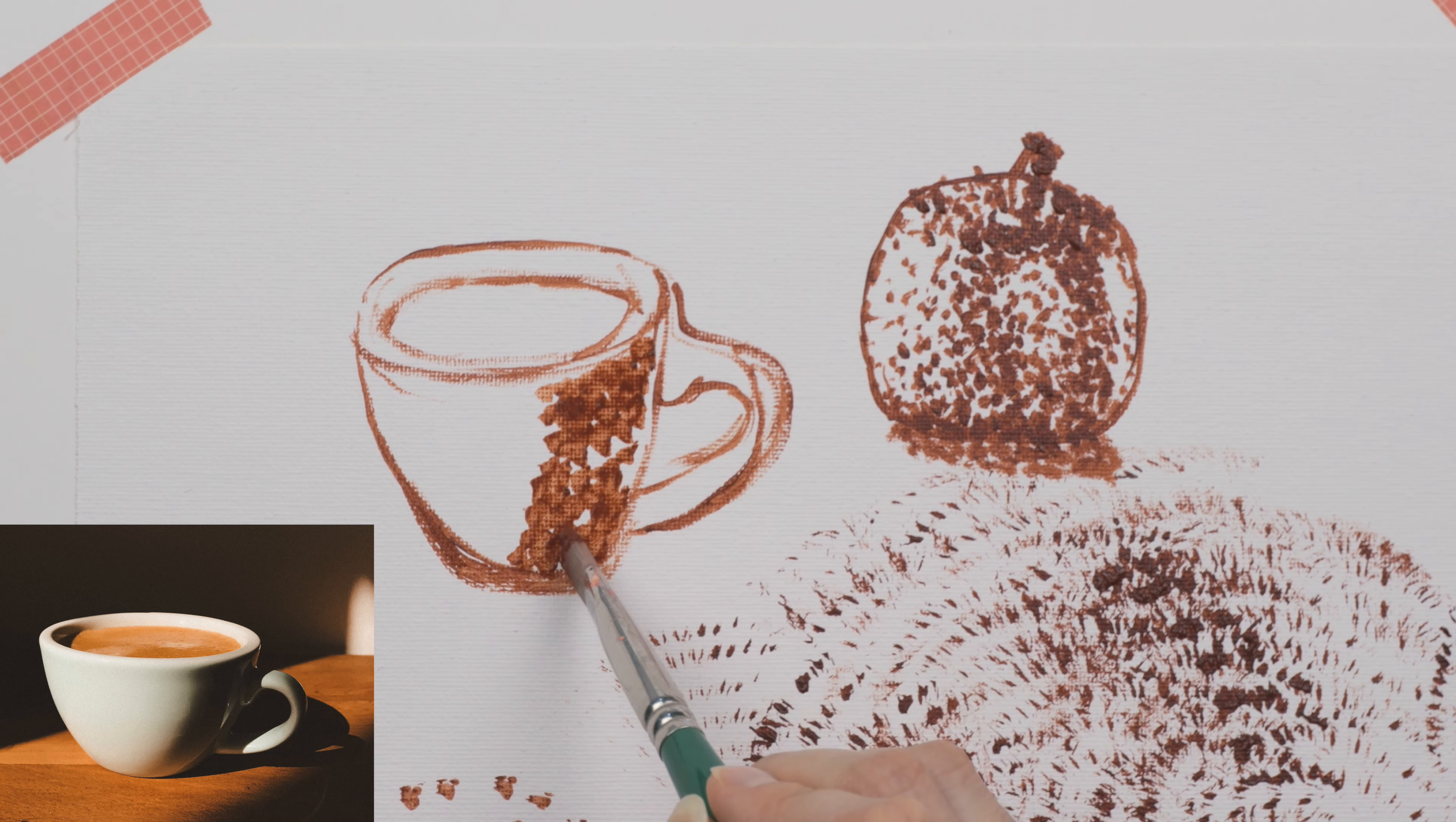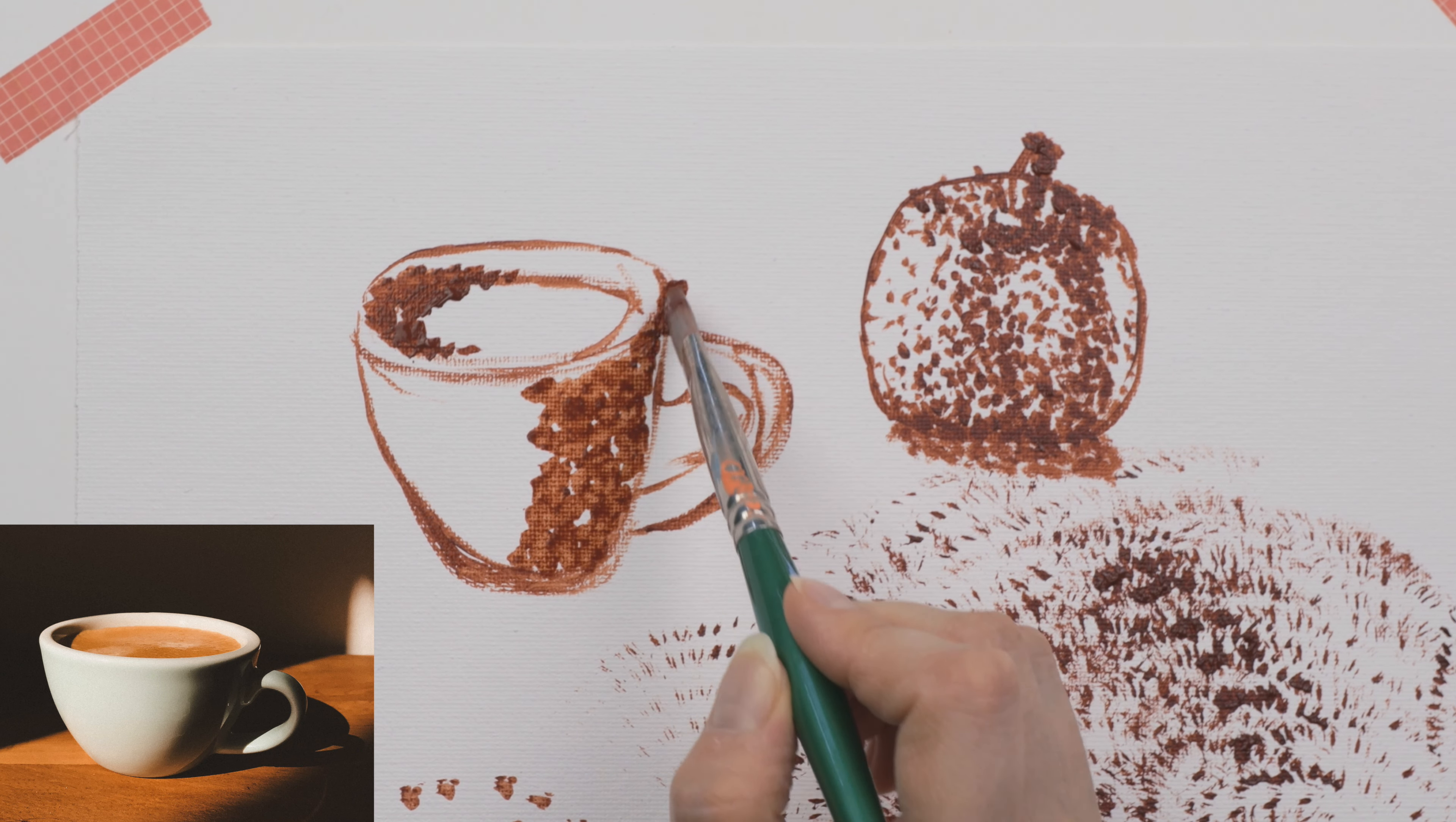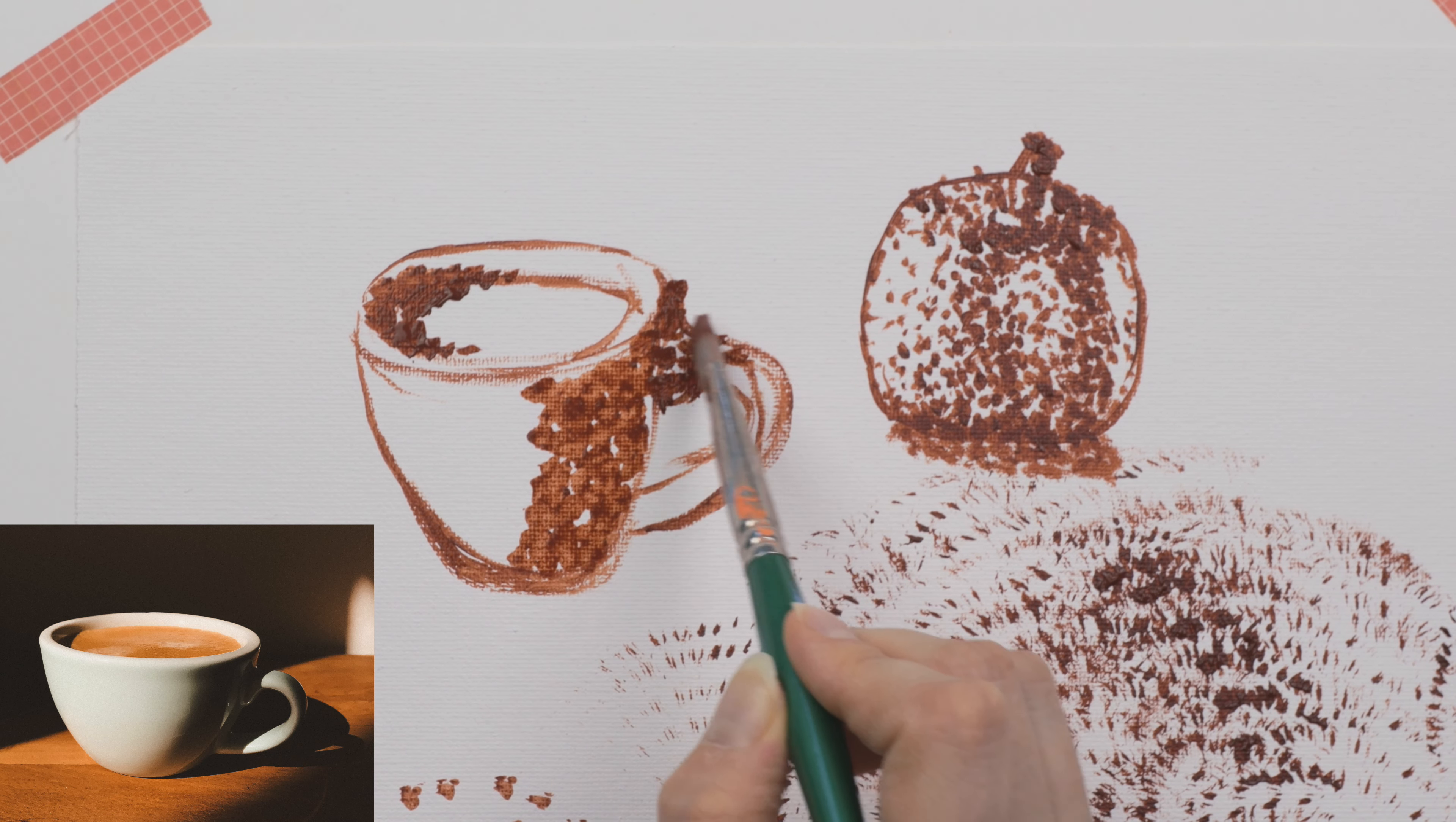For darker areas in your painting, you can add more dots close together, even overlapping them. And then for lighter areas, you can leave more space between the dots and have less dots overall.